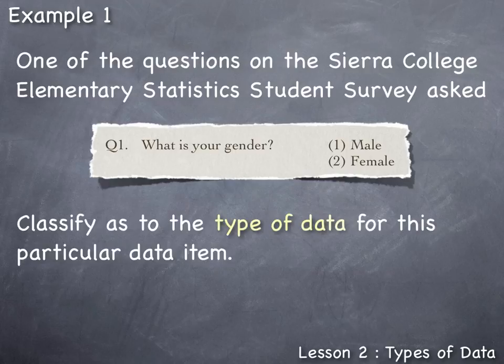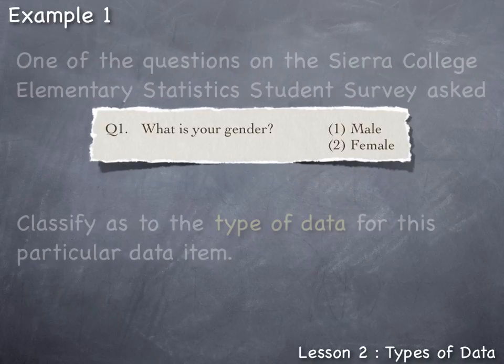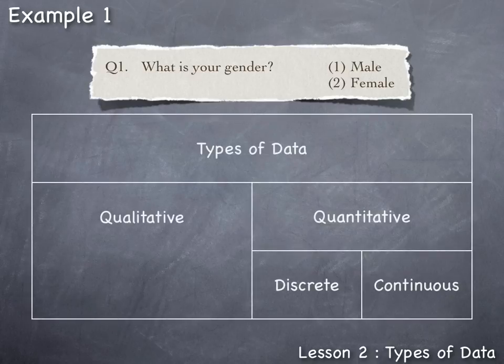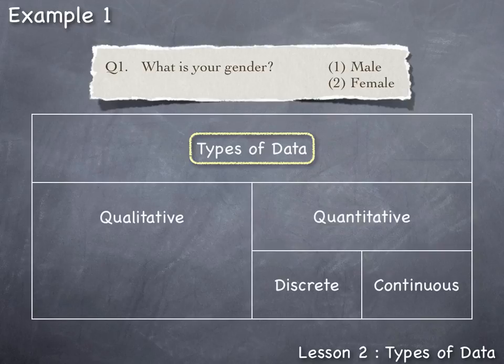To identify this data by type: when it comes to classifying data by type, data is either qualitative or quantitative. Quantitative data can be further classified as either discrete or continuous.